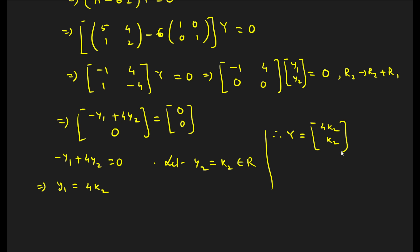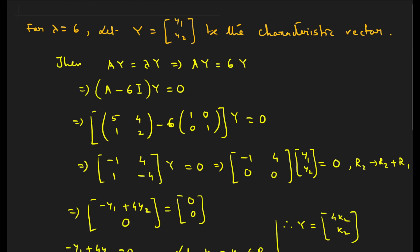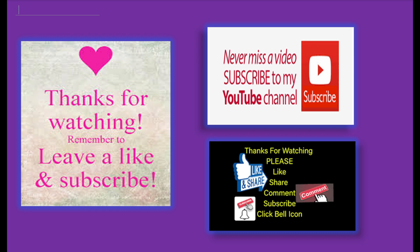So it's very simple: first we find the characteristic roots, then we find the characteristic vectors using echelon form. For a 2 by 2 matrix we get two characteristic roots — sometimes they can be repeated, in which case we only find one vector. If you don't know echelon form, go watch that video first and then return to this problem. I hope you liked my video — please share it with your friends so they can learn too. Thank you very much for watching.